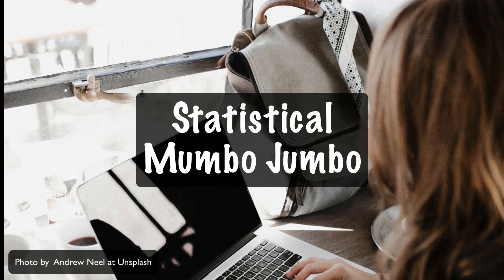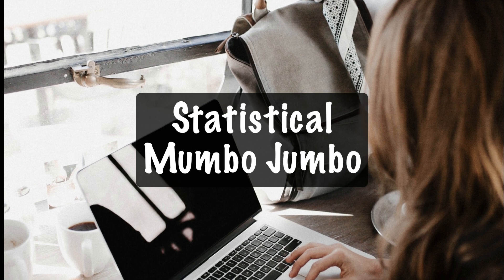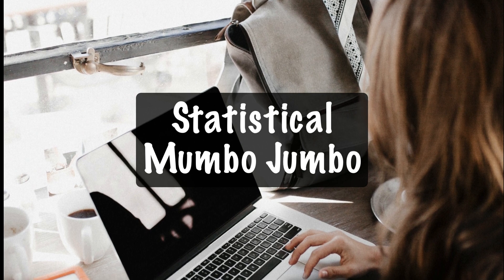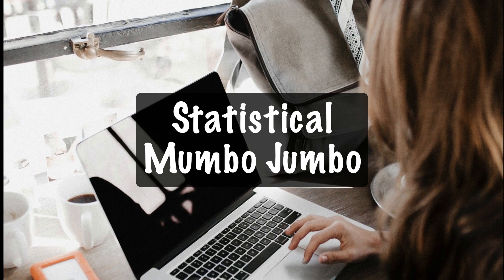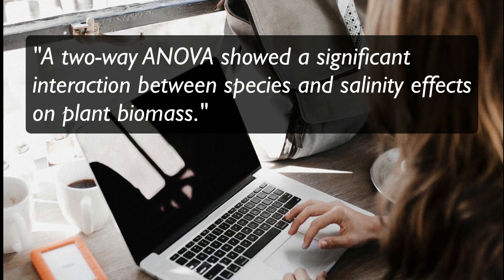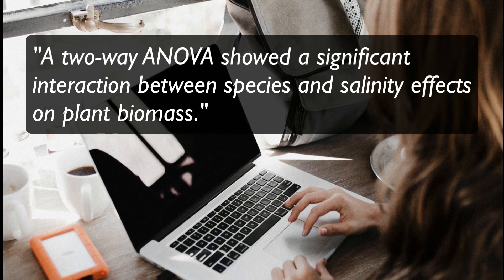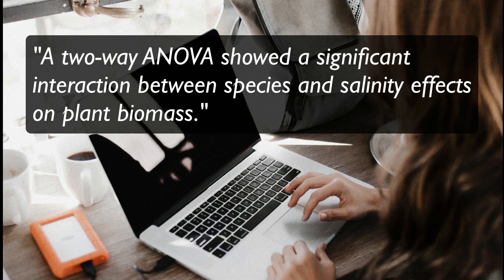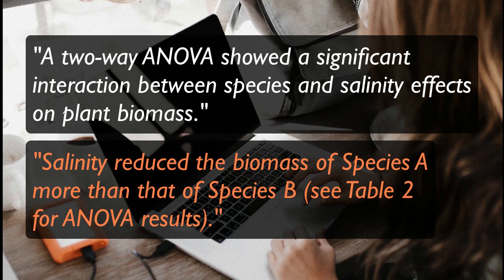Statistical Mumbo-Jumbo. In describing their results, some novices inadvertently hide their findings behind statistical jargon. This mistake occurs because the authors are too focused on the statistical tests, which have helped guide them through their data. They then describe their results in statistical language instead of just saying how the experiment turned out. For example, they may write that a two-way ANOVA showed a significant interaction between species and salinity effects on plant biomass. This sentence fails to explain how salinity affected the two species. Instead, describe what happened in everyday language: salinity reduced the biomass of species A more than that of species B.